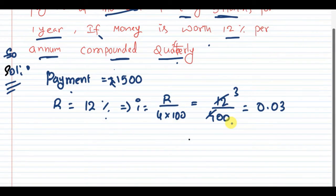Now number of installments he paid, that means the value of N is 4. Every 3 months he is paying an amount, so N is 4.